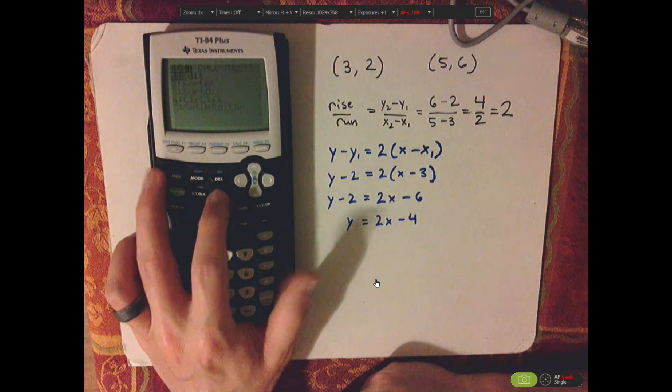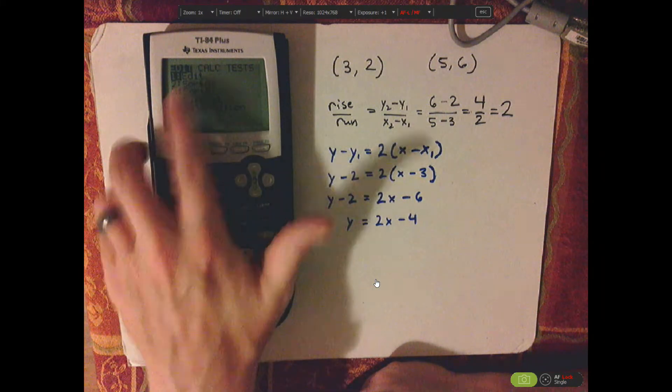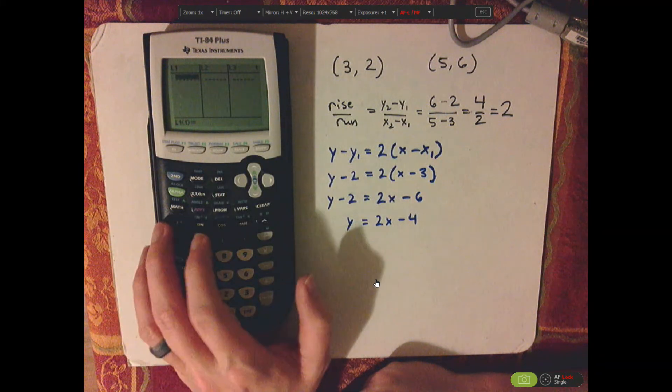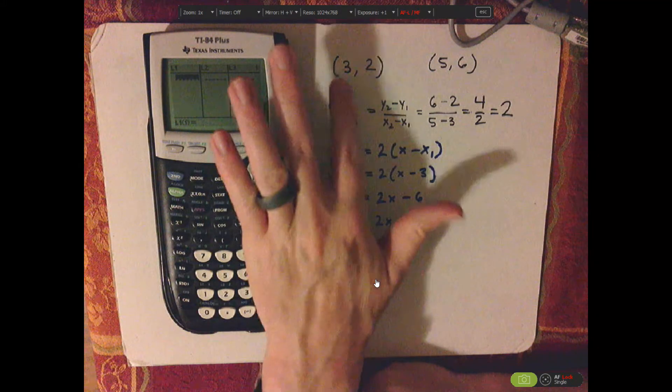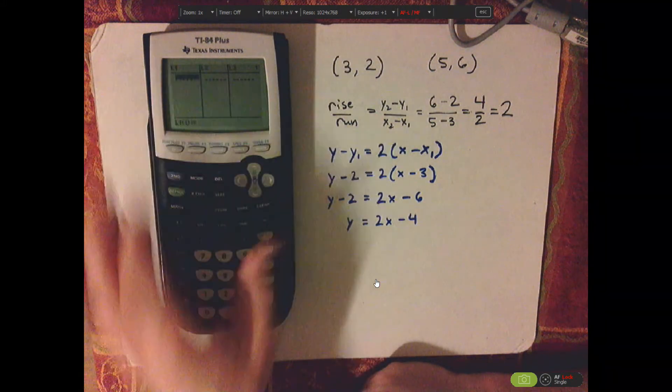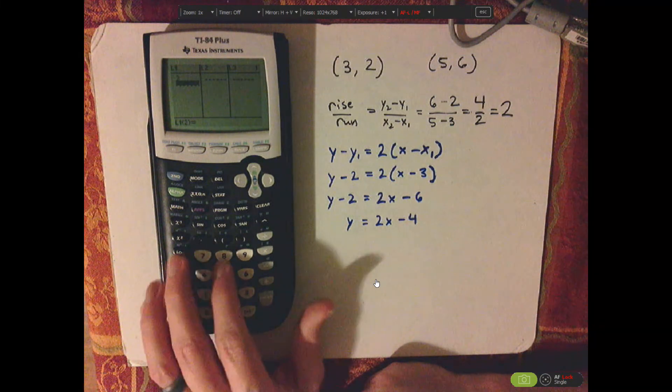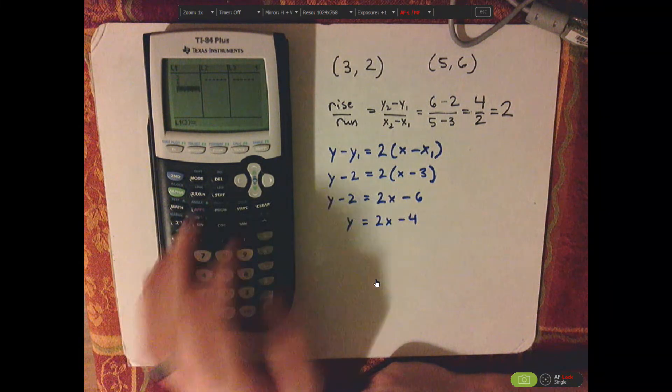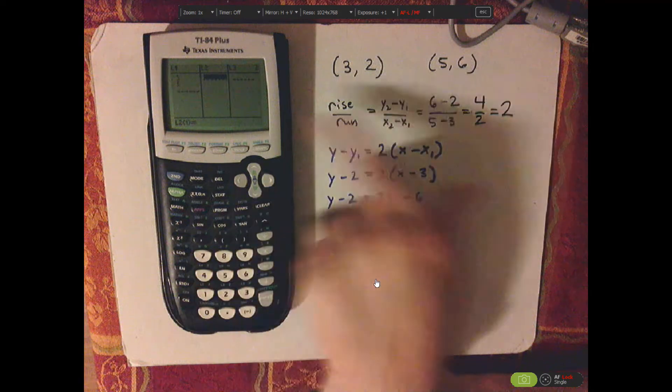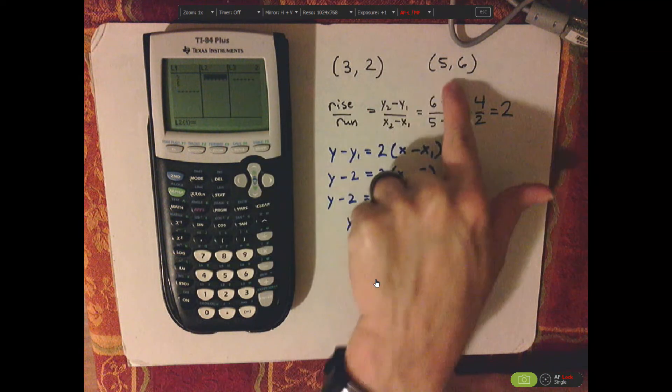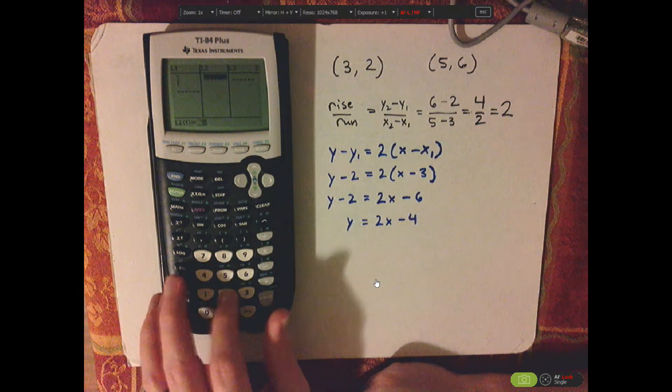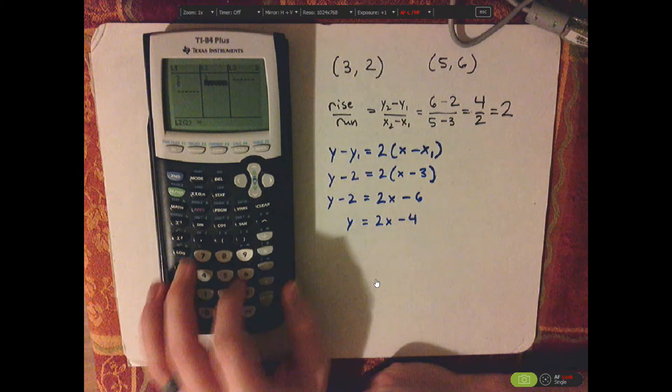So you go to stat, and then go to edit, and then you're going to type in your points. In list one, put your x-coordinates, so 3, 5, and then in list two, you're going to put your y-coordinates, 2, and then 6.